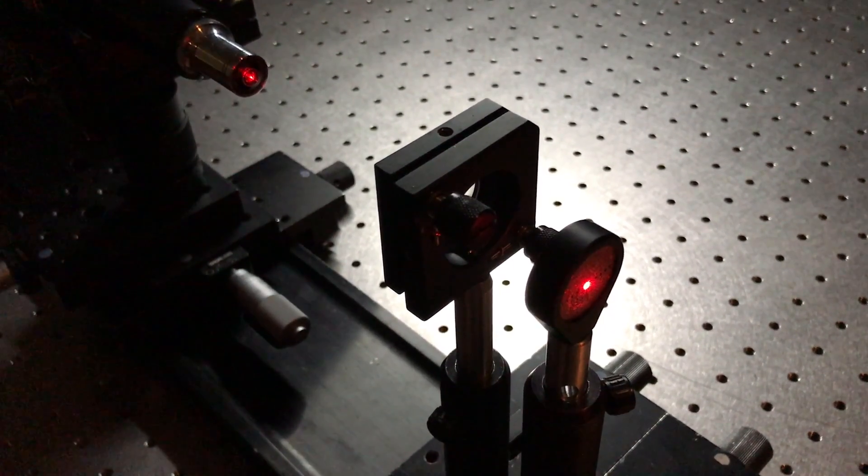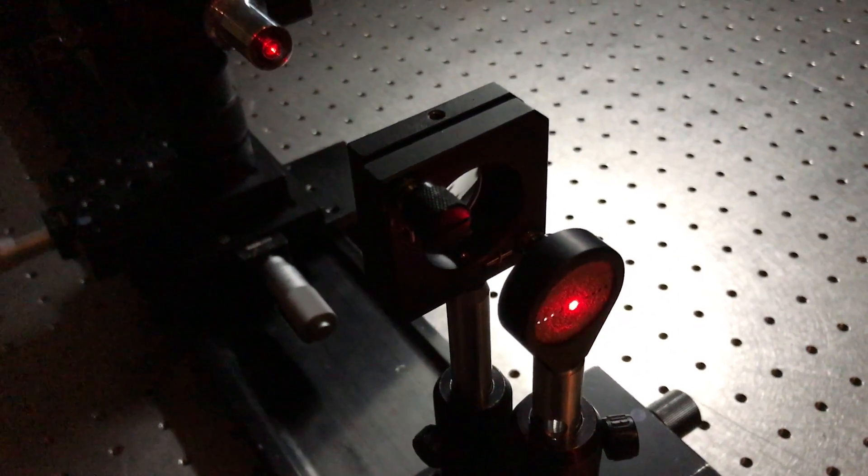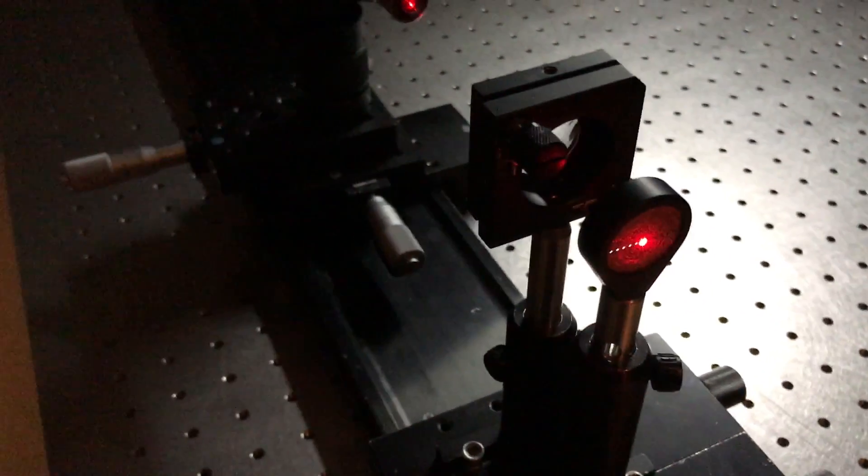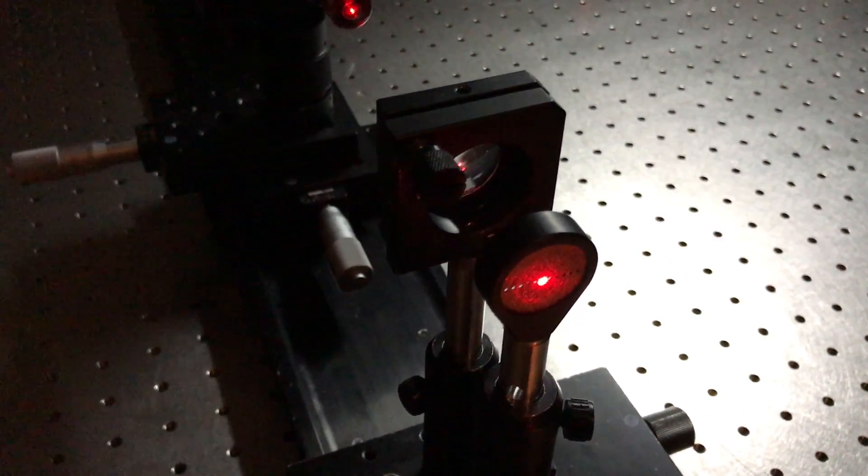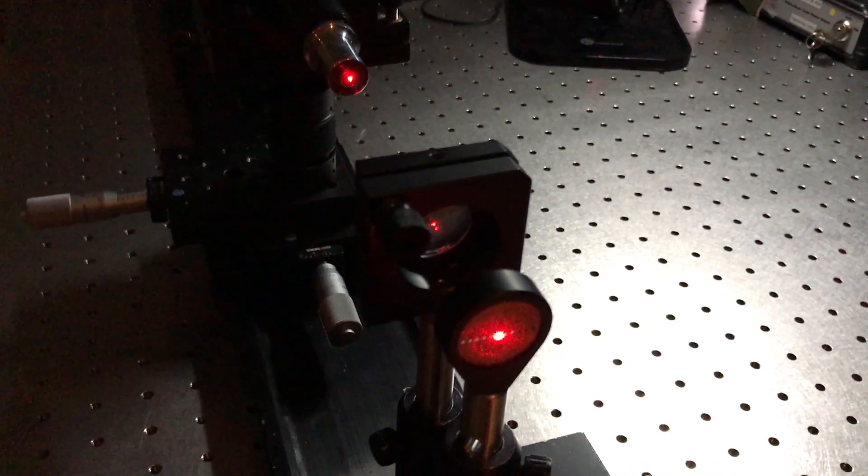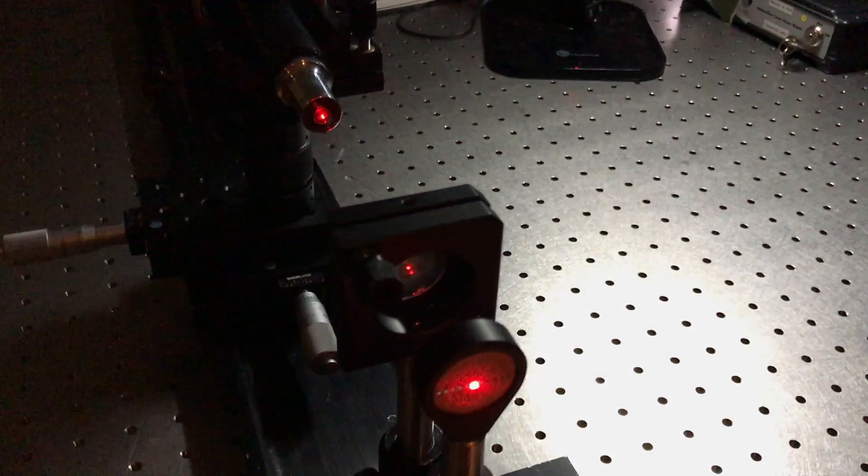So now we flip the lens in order to get the curved side facing the laser beam. And we took the same measurements to show how shape factor can affect spherical aberration. We expect these values to be much smaller and closer together than for the previous ones.